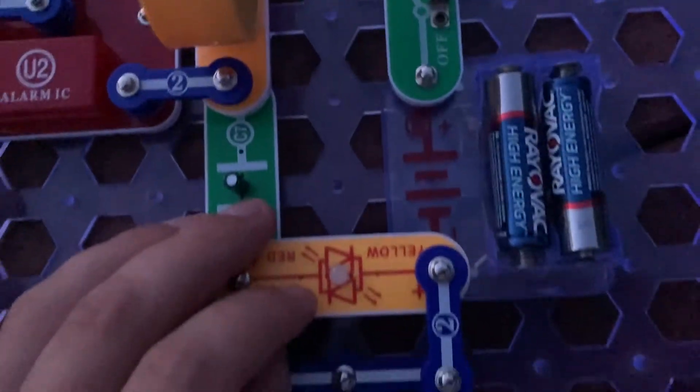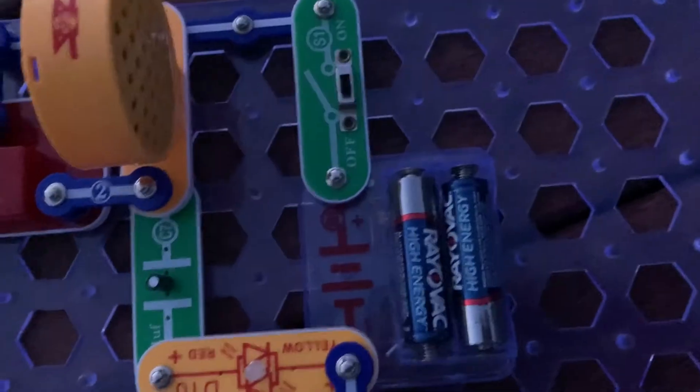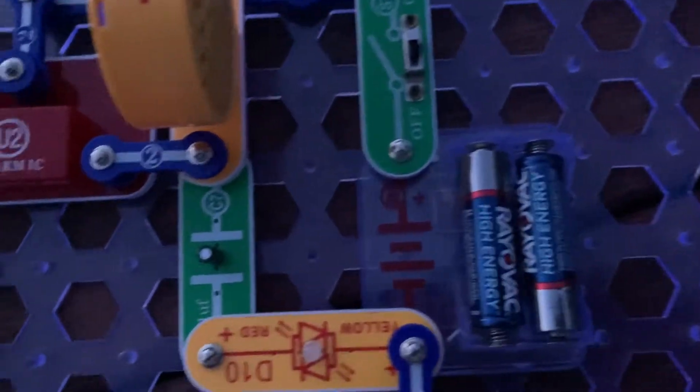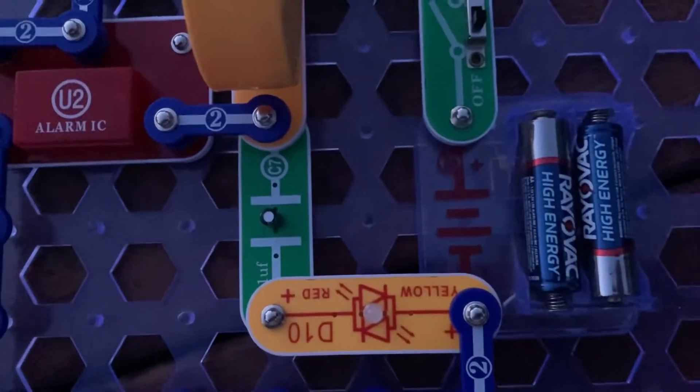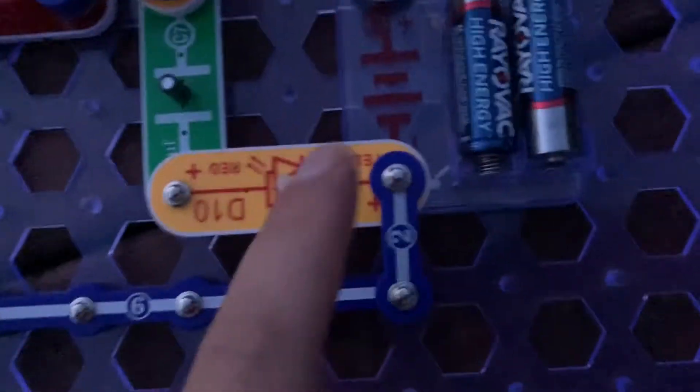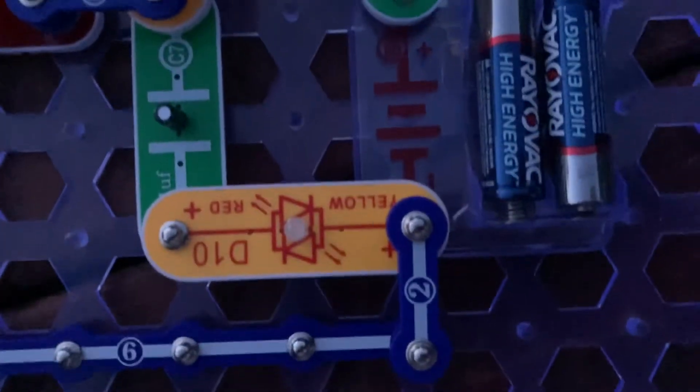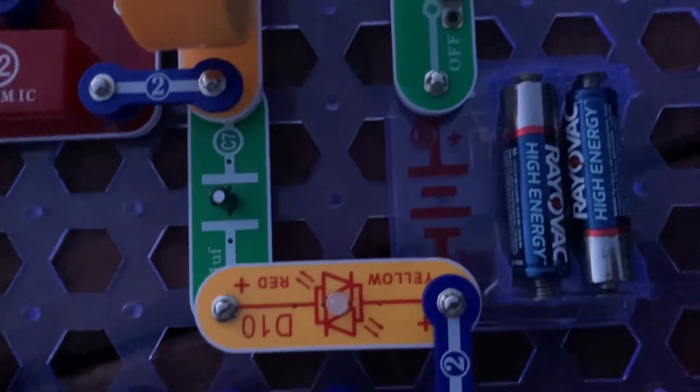and then when you discharge the capacitor by turning off the switch, it will glow the other color, but the colors switch so quickly that they may appear to be orange, and red and yellow make orange when you mix them.